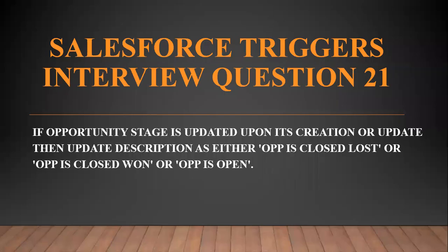Hi all, welcome to the Salesforce Ultimate Guide channel. In this video we are going to continue with our trigger exploration. We have scenario question number 21: if an Opportunity's stage is updated upon its creation or update, then update the description as either 'Opportunity is Closed Lost', 'Opportunity is Closed Won', or 'Opportunity is Open'.